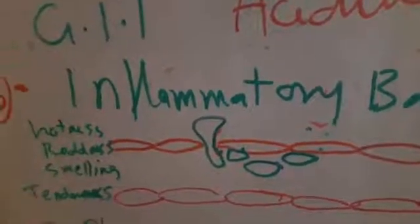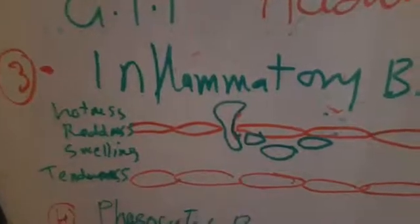These major events lead to hotness, redness, swelling, and tenderness at the area of inflammation. The fourth barrier of innate immunity is the phagocytic barrier, and an example of that barrier is a granuloma. Here, for example, this macrophage ingests the bacteria.